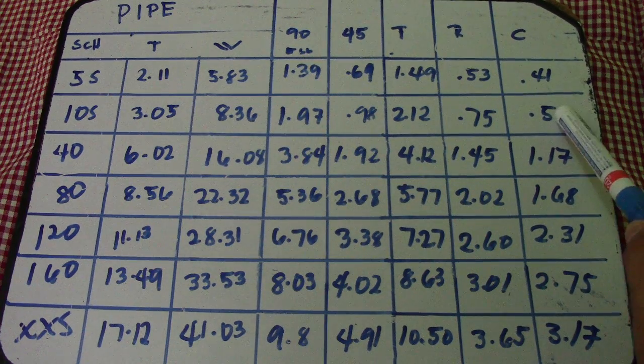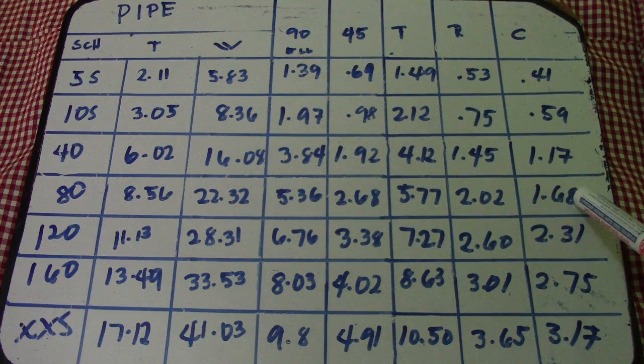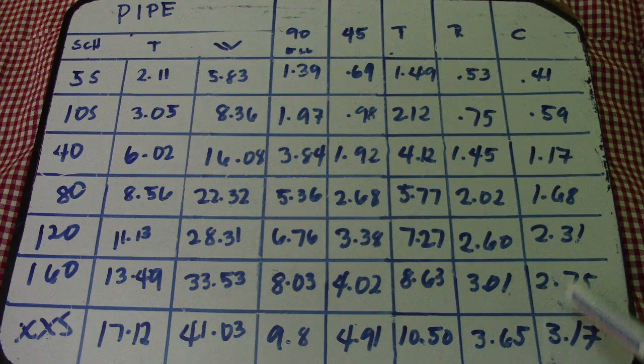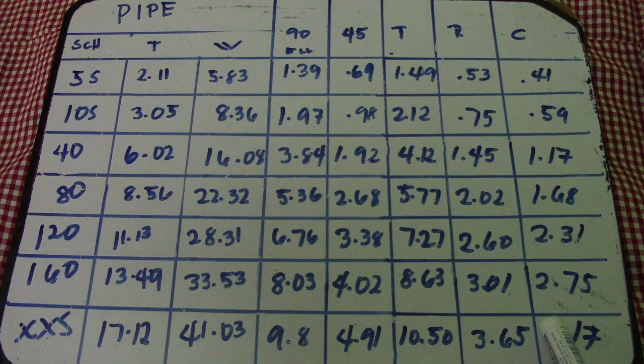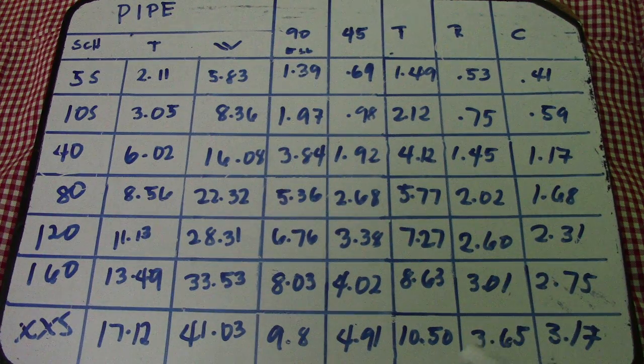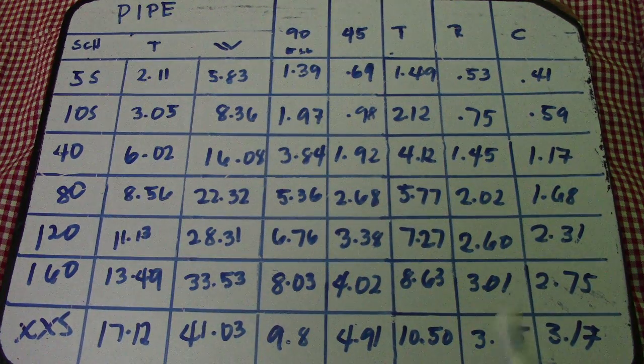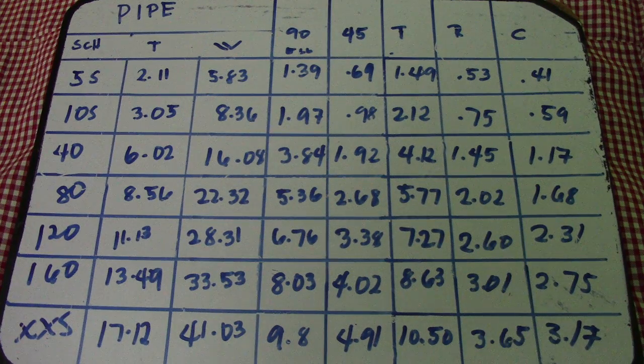Next is cap: 0.41, 0.59, 1.17, 1.68, 2.31, 2.75, and 3.75. This is the column for the piping dimension and weight.